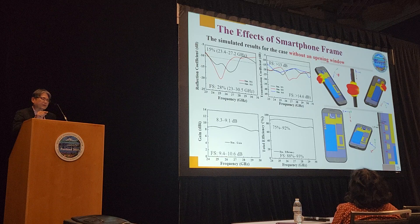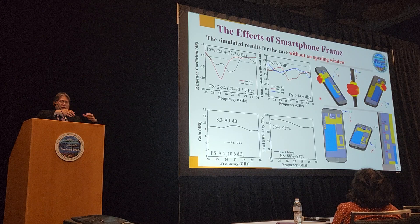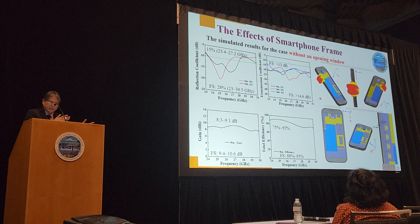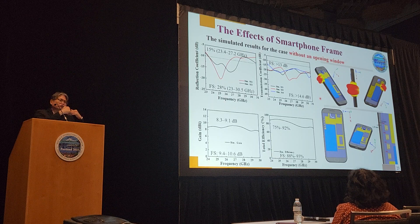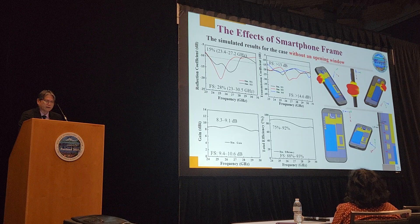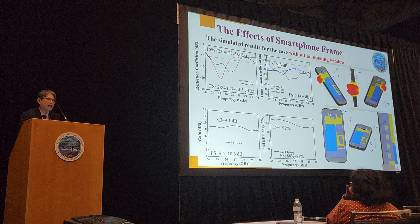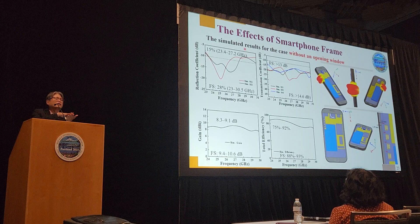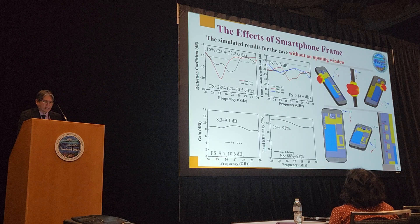Before integration, we had a really nice beam pointing in the Z direction. Because of this plastic frame loaded on top, the whole radiation pattern has been split into two — something that looks like a conical pattern pointing in a different direction. At the high band, the impedance matching is quite poor because of all the elements surrounding the antenna — the glass, battery, and all this. The gain drops a little bit and the S21 is approximately okay.